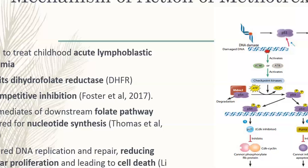Nucleotides are necessary for DNA replication and repair, and when these are not synthesized this leads to reduced cell proliferation and eventually cell death. Excessive DNA damage causes the activation of p53, and being unable to be repaired, p53 is activated, which eventually leads to the activation of PUMA. PUMA inhibits BCL2, and the inhibition of BCL2 allows cells to undergo apoptosis. So basically, methotrexate involves BCL2 being inhibited and apoptosis occurring in the cancer cells, and this is how it induces death in these cancer cells.